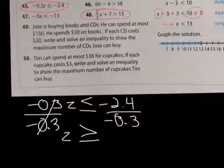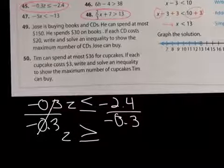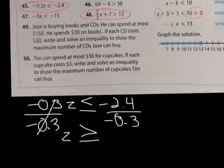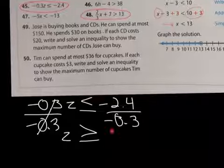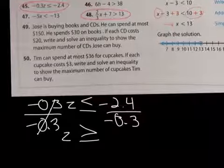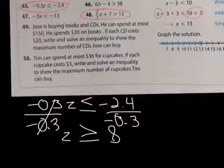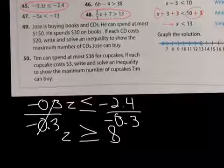And when I divide negative 2.4 divided by negative 0.3, I'm going to get a positive. Negative divided by negative is positive. And it's going to be 8. So z is greater than or equal to 8. Is that true? Well, let's substitute it.